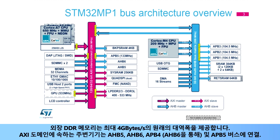An internal DDR memory provides a raw bandwidth up to 4 gigabytes per second. Peripherals belonging to the AXI domain are connected to AHB-5, AHB-6, APB-4 through AHB-6, and APB-5 buses.